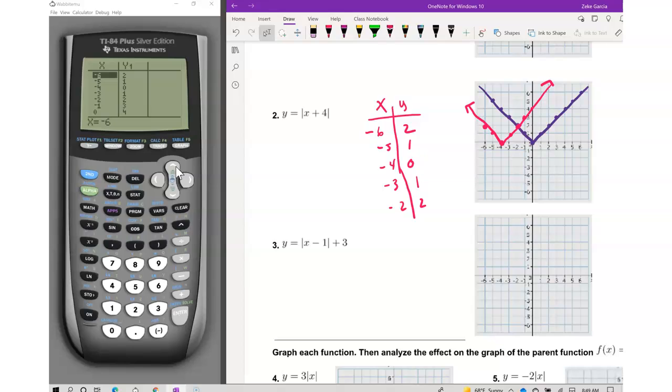You have to describe the transformation. The graph will move or shift to the left 4 units. The graph will shift 4 units to the left.